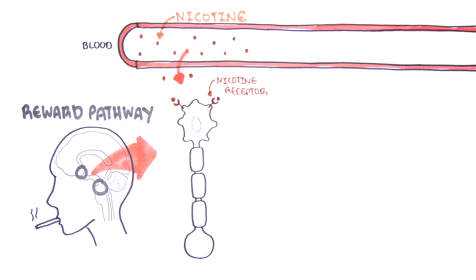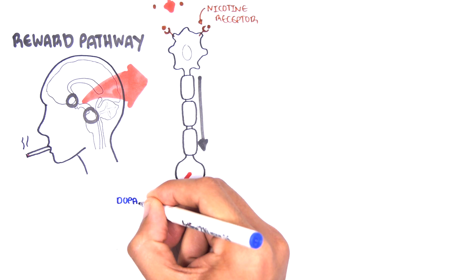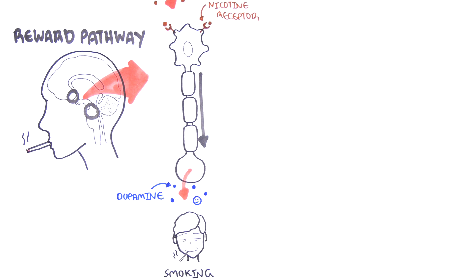Nicotine targets neurons in the reward center, stimulating the reward pathway. Stimulation of the reward pathway releases dopamine, a chemical that makes you feel warm and fuzzy and satisfied. So you want to do it again.